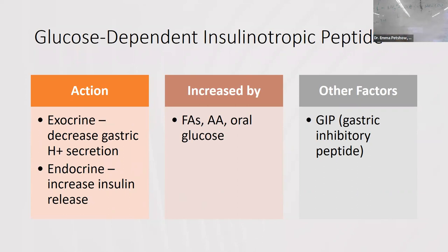GIP's exocrine function is triggered when the stomach is in too acidic a state, decreasing gastric hydrogen ion secretion as a protective factor for the gut. Its endocrine function — insulin release — is triggered by fatty acids, amino acids, and oral glucose as fuel sources. Insulin release will be increased when you're consuming more glucose and downstream fuel substrates.